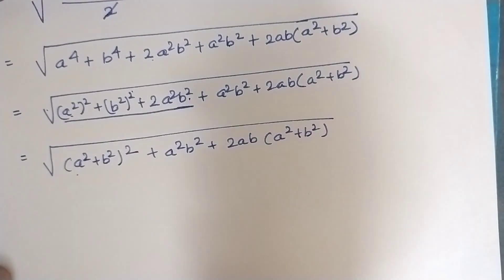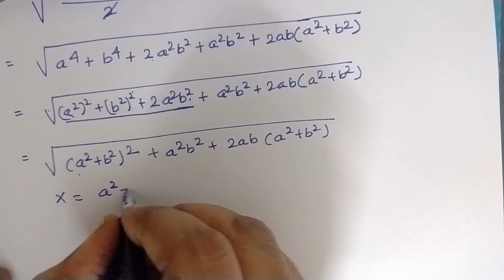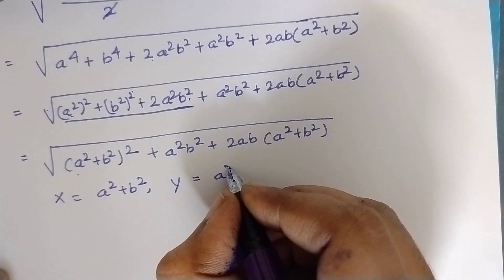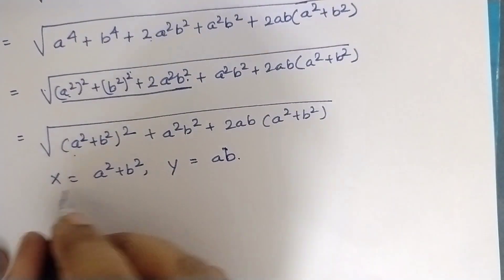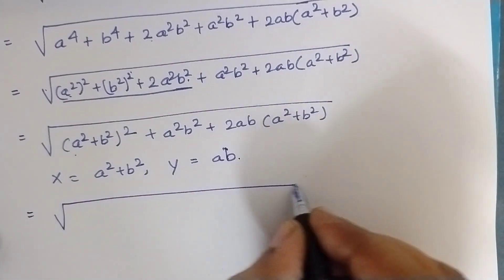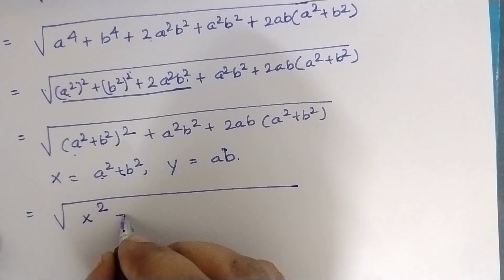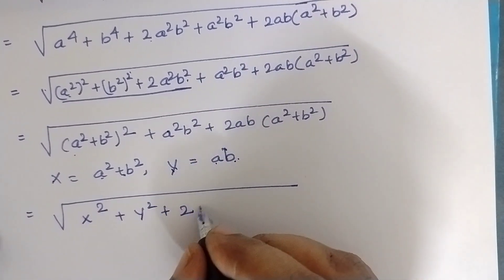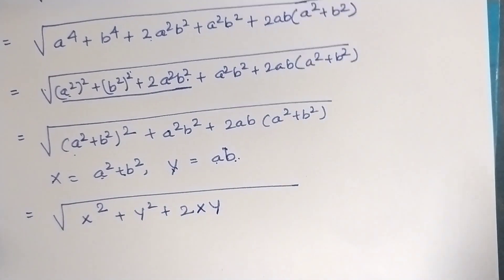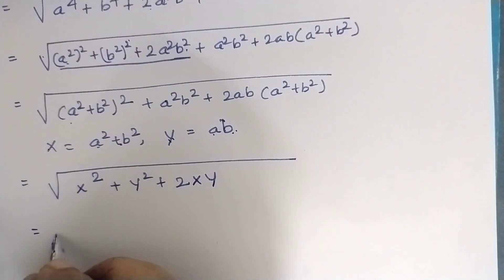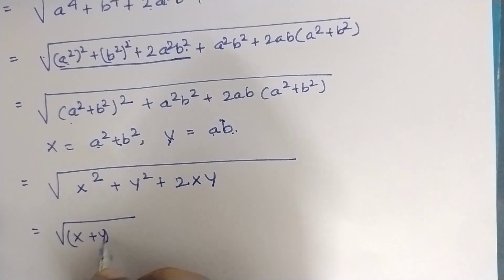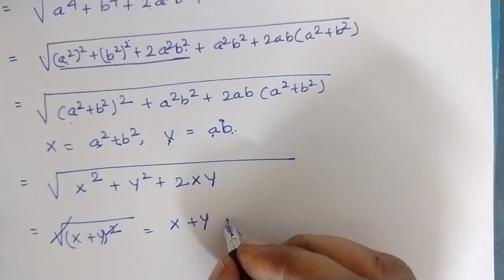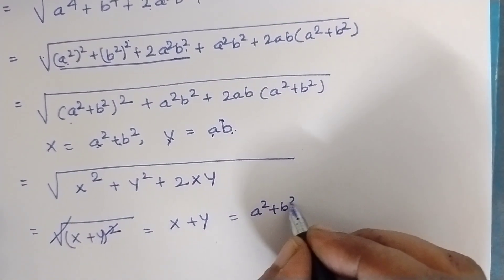Now I change A to the power 4 as (A squared) the whole square, and B to the power 4 as (B squared) the whole square, plus 2 times A squared times B squared. This is in the format of (A plus B) squared. So let X equal A squared plus B squared and Y equal AB. Then this becomes the square root of X squared plus Y squared plus 2XY, which is the square root of (X plus Y) squared. The square root and square cancel, giving X plus Y, which is A squared plus B squared plus AB.